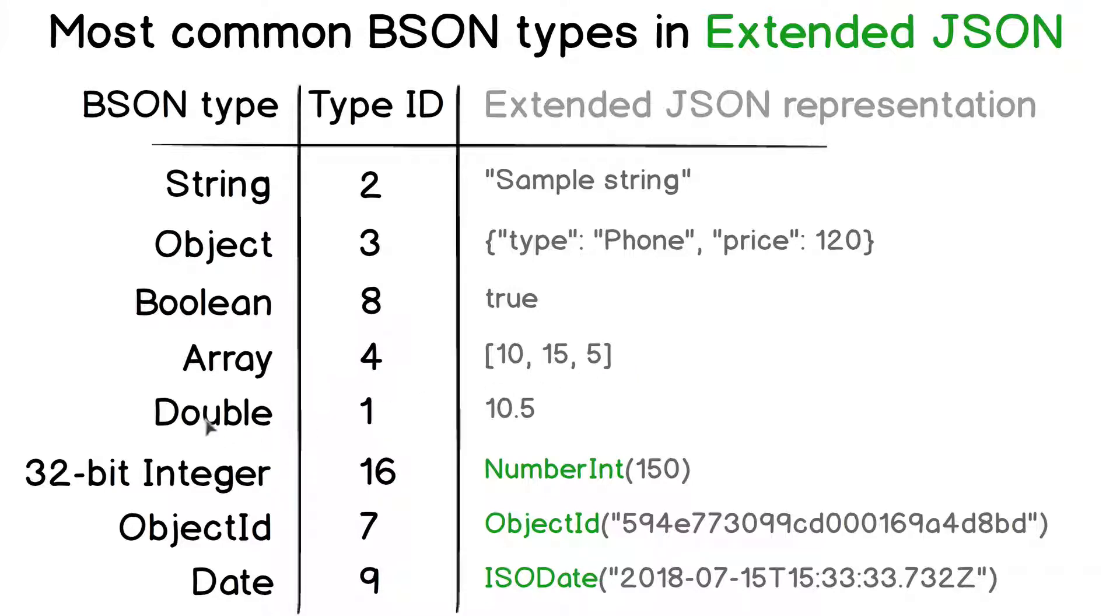Double. Any number in MongoDB, if not instructed otherwise, is stored as a double. You see here a dot, but without a dot, if you pass a plain number to MongoDB, this number will also be stored as a double.